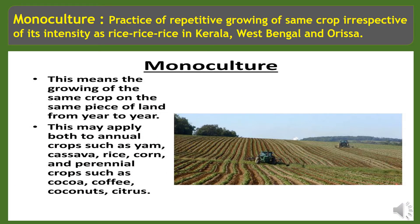Monoculture is the practice of repetitive growing of the same crop irrespective of its intensity. For example, rice, rice, rice in Kerala, West Bengal and Odisha states. Monoculture means the growing of the same crop on the same piece of land from year to year, and this may apply both to annual crops such as yam, cassava, rice, corn, and perennial crops such as cocoa, coffee, coconuts and citrus.